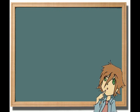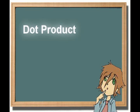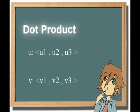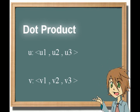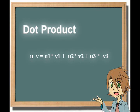Now, the next thing about vectors that you need to know is how to find the dot product of two vectors. Let's say we have vector u and vector v. To find the product of the two, you take the product of u1 and v1, add that to the product of u2 and v2, and then add that to the product of u3 and v3.